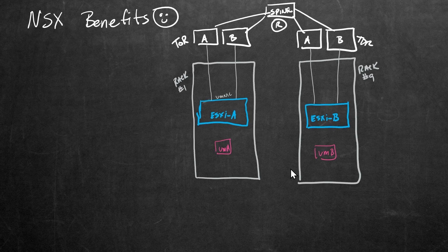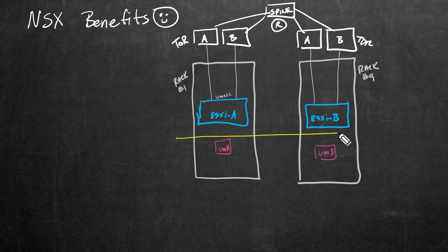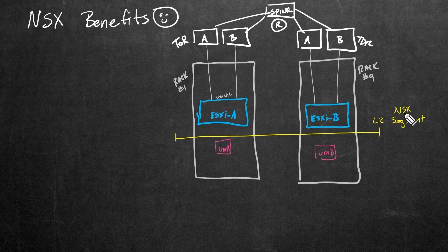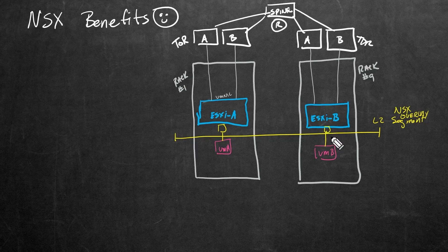Here's the magic — hold on to your hats. Instead of connecting these virtual machines to a traditional distributed port group that would put them on the same VLAN, we are going to have a new segment — a new layer-two NSX overlay segment. From an administration perspective, it just looks like a port group representing that segment, and we simply connect the respective VMs to it.